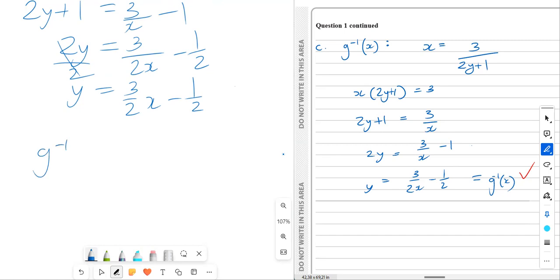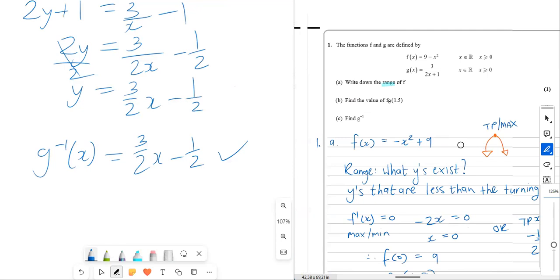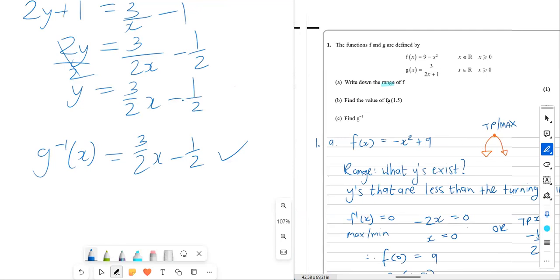I've just done it quickly there. But your final step should look like this. You want to obviously show that this is g to the minus 1 of x. Perfectly. That is number 1. Just go back to the question. Check everything that they asked for. Perfect.